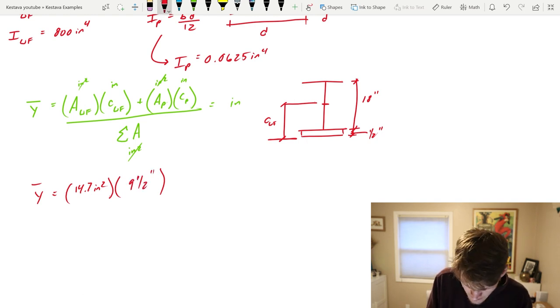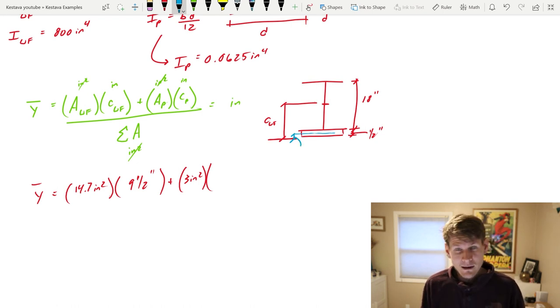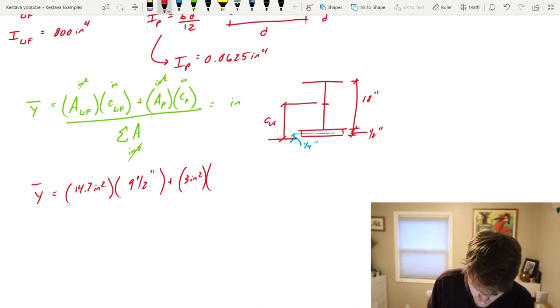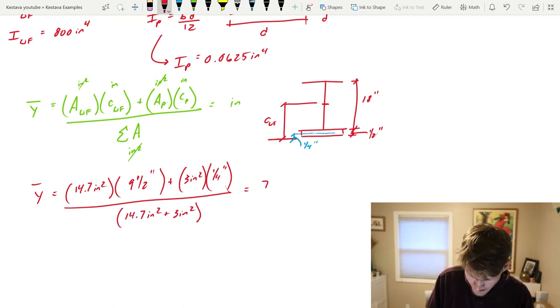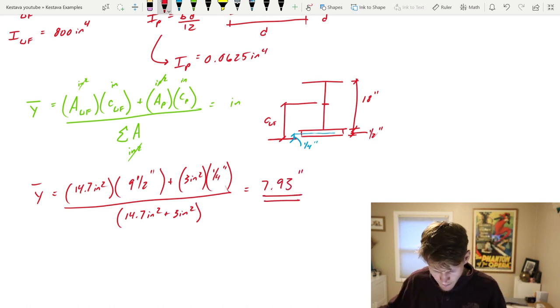Nine and a half plus area of the plate, it's three inches squared. And now we need the centroid of the plate to that starting line. So that's just one half divided by two which is just a quarter inch. Divide all of that by the areas added together. That spits out 7.93 inches. All right now we have y bar.